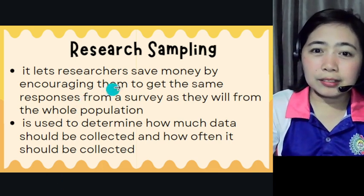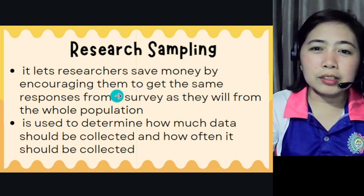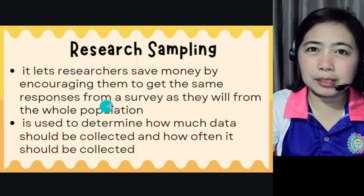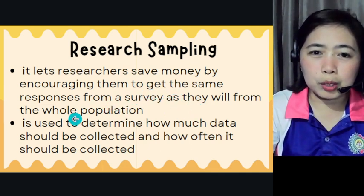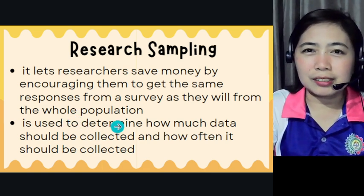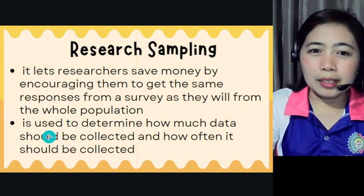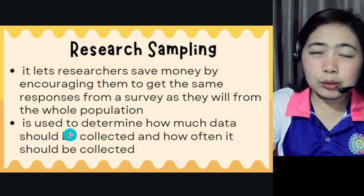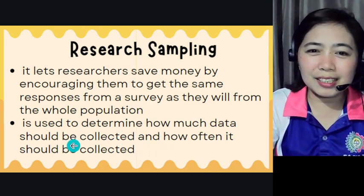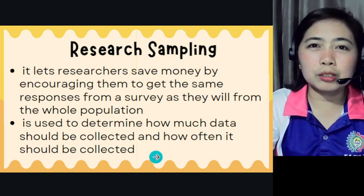It lets researchers save money by encouraging them to get the same responses from a survey as they will from the whole population — so researchers can save resources. It is also used to determine how much data should be collected, and how often it should be collected.